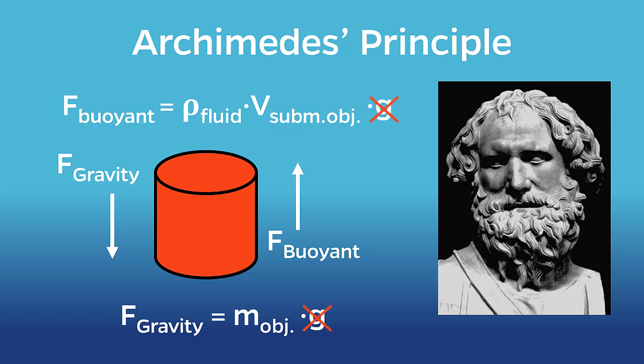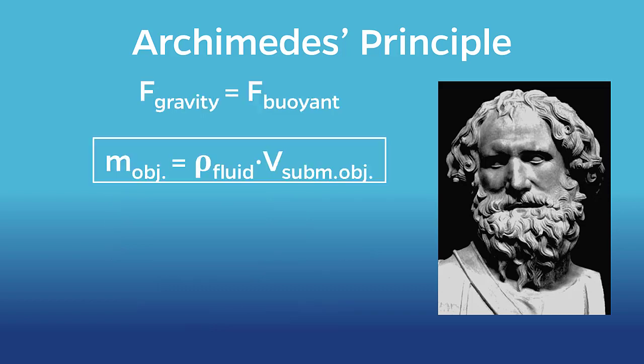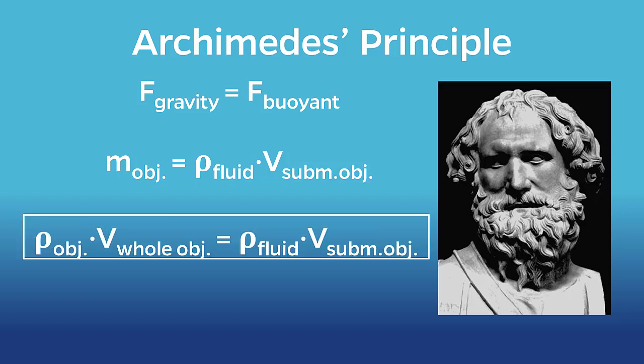Notice that there's a g on both sides, which can cancel out of the equation. The result is that the mass of the object equals the density of the fluid times the volume of the submerged object. Remember that any time you derive an equation like this, it's worth it to do a quick dimension check. If it makes sense, we can also express the mass of the object as density of the object times the volume of the entire object.